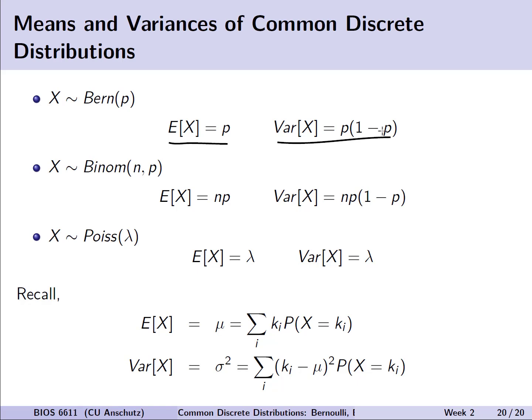If we have multiple trials that we're looking at, and we actually have a binomial random variable, the mean will be equal to n times p, the number of trials times the probability of success, and the variance will look very similar to the Bernoulli with just the addition of n in front of the p times 1 minus p.